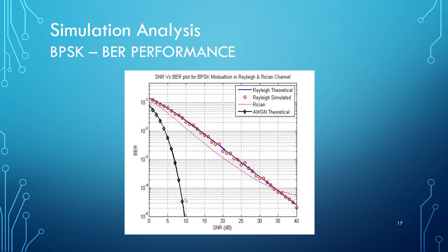Now let us look at the simulation analysis of the BER performance for all digital modulation schemes. For BPSK, BER is plotted against signal-to-noise ratio for AWGN, Rayleigh, and Rician channels. It can be seen from the figure that Rayleigh simulated is very similar to Rayleigh theoretical, and the Rician channel gives better performance when compared to Rayleigh. It is also obvious that AWGN gives a much better channel performance when compared to Rayleigh and Rician.